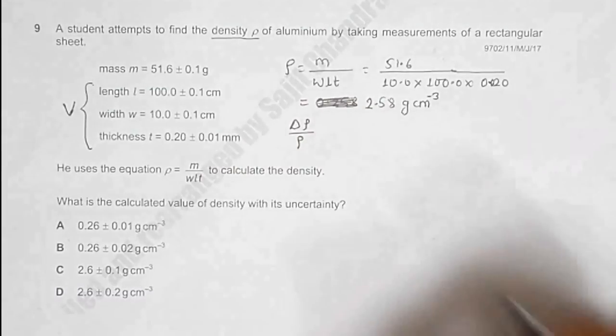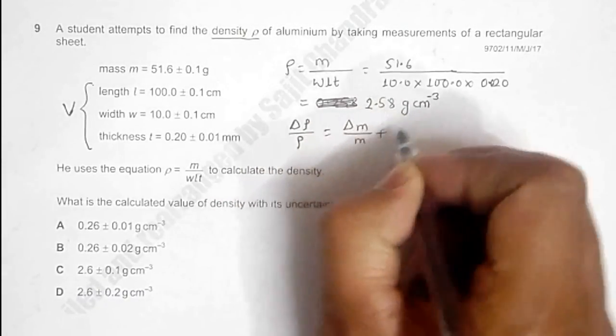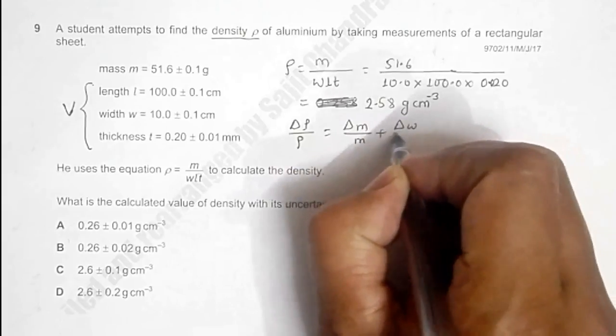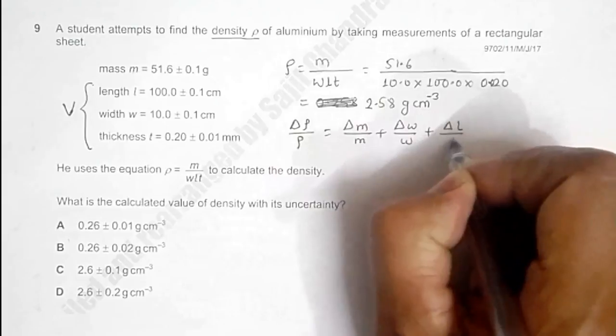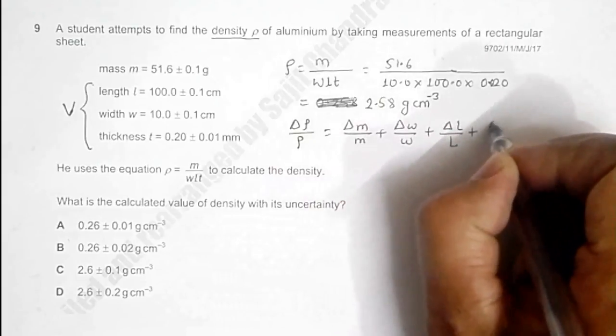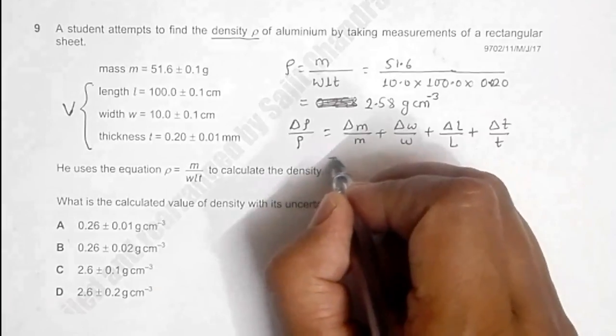to Δρ/ρ = ΔM/M + ΔW/W + ΔL/L + ΔT/T, which will be equal to